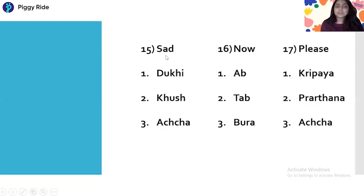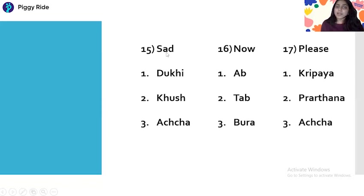Next we have Sad, Now, and Please. Sad means — option one: Dukhi, option two: Khush, option three: Achha. Sad means Dukhi. Question sixteen is Now — option one: Ab, option two: Tab, option three: Bura. Now means Ab.